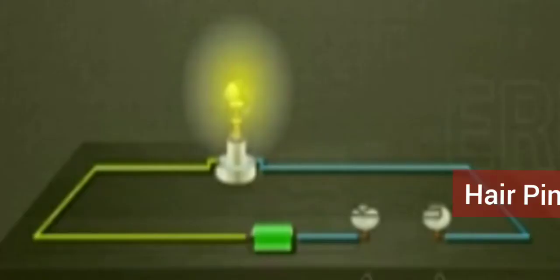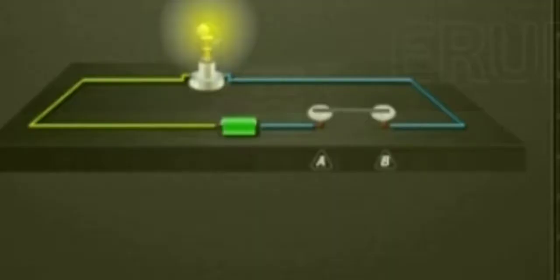Now when a hairpin is used, as it is metal, the bulb glows. When pencil lid is used, as it is made up of graphite, the bulb glows.